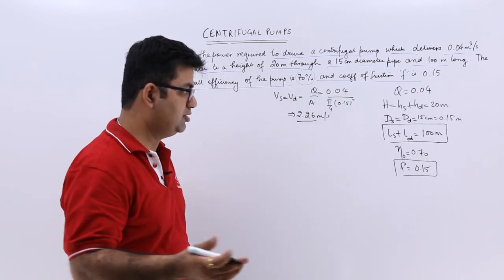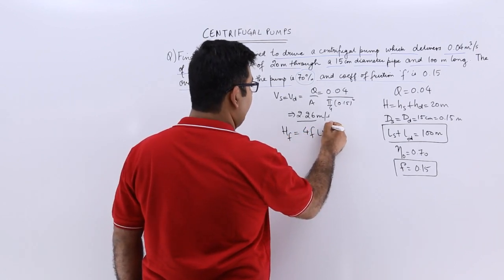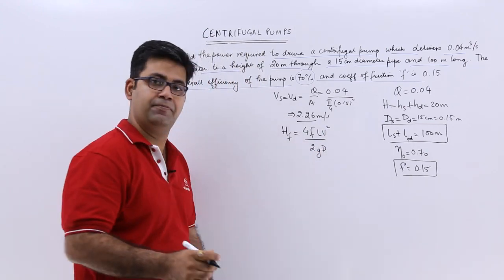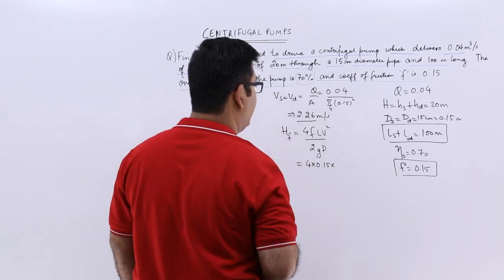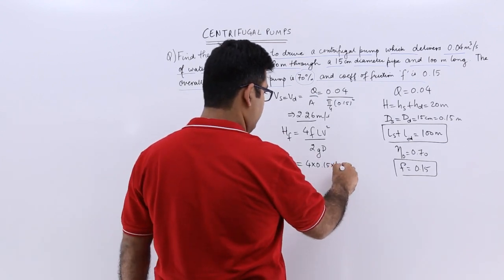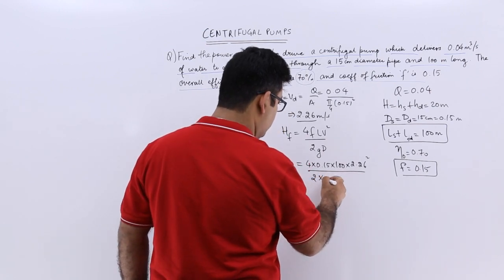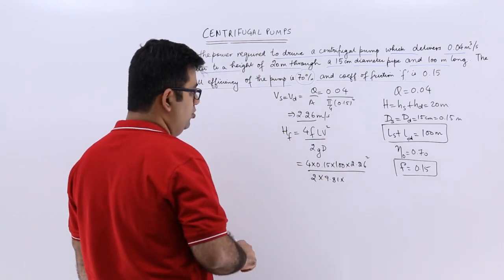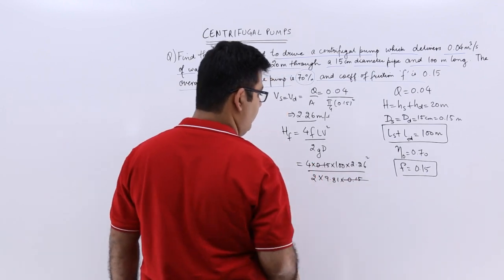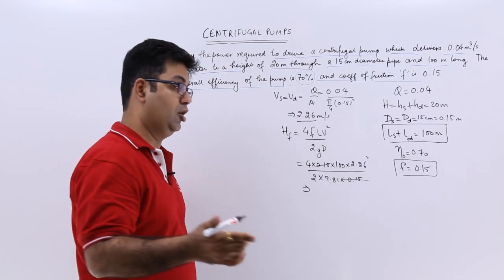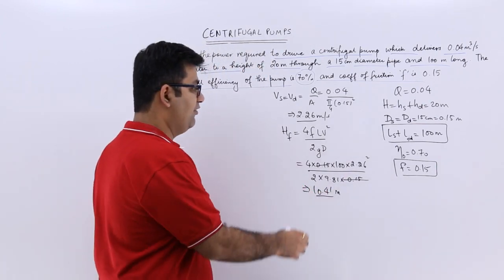The total friction loss H_F equals 4 × F × L × V² divided by (2 × g × D). Substituting the values: 4 × 0.15 × 100 × (2.26²) divided by (2 × 9.81 × 0.15). This gives a total friction head loss of 10.41 meters.